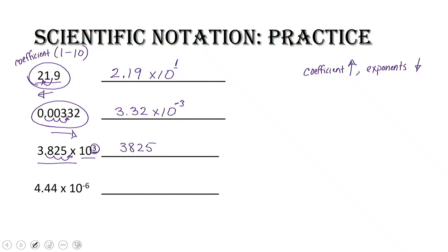Now we've got a negative exponent. That means this number is less than 1. So in order to make this number less than 1 in expanded notation, we have to move our decimal to the left — six spaces. We move it 1, 2, 3, 4, 5, 6 spaces and fill in with zeros. So we get 0.00000121.